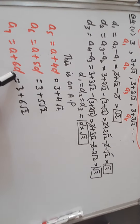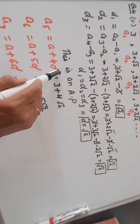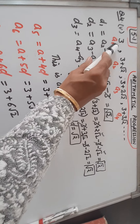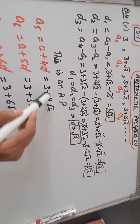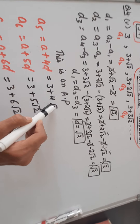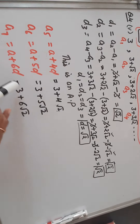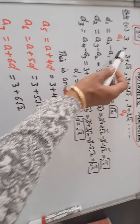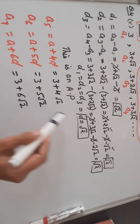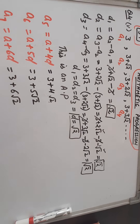Now let us find the next three terms: A5, A6, A7. A5 is A plus 4D, where A is the first term, which is 3, and D is root 2. So A5 is 3 plus 4 root 2. Similarly A6 is 3 plus 5 root 2, and A7 is 3 plus 6 root 2. So this is the answer.